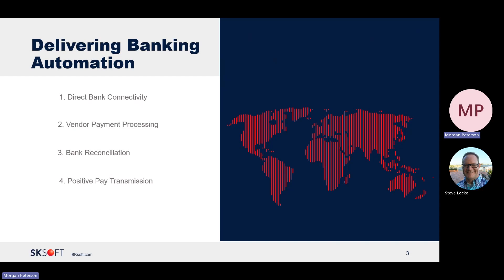First, we deliver direct banking connectivity. This is the foundation of our solutions, and we'll discuss how we establish that through Bank Fabric. We will then go into vendor payment processing, and then we'll go into bank reconciliation and how, through our solution, we can increase efficiency of the reconciliation process and streamline it with our direct banking connectivity.